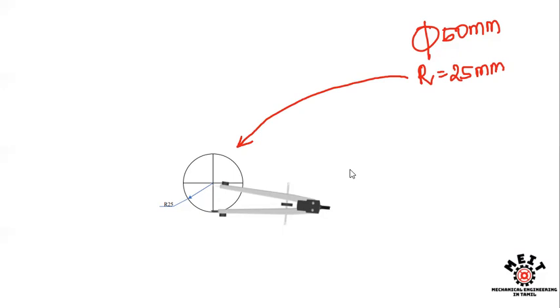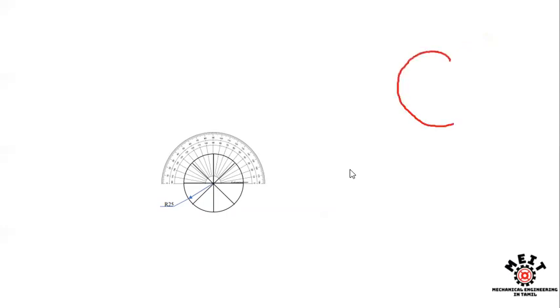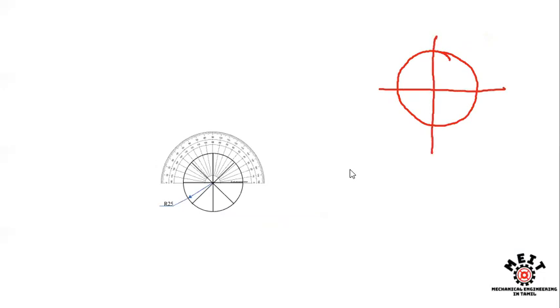Once we have drawn the circle, we need 8 parts of the circle. First of all, divide the circle into 4 — one horizontal line and one vertical line. What we need to do on the right side is draw a 45-degree line, and on the left side also draw a 45-degree line, using your protractor.